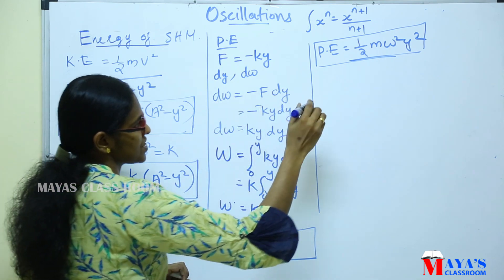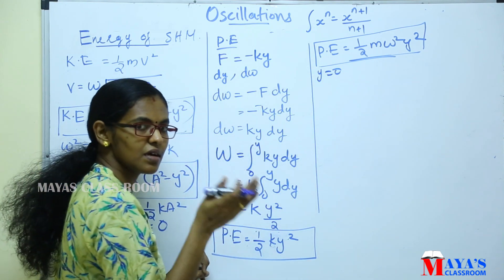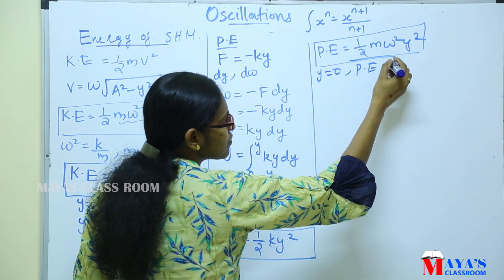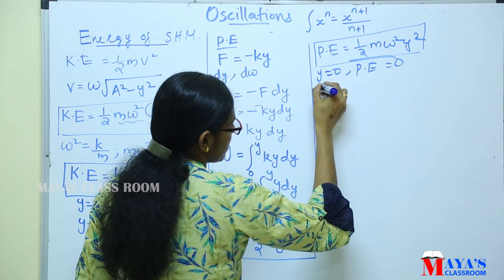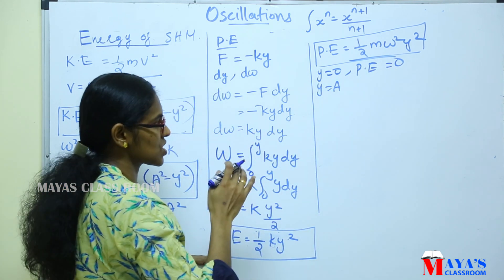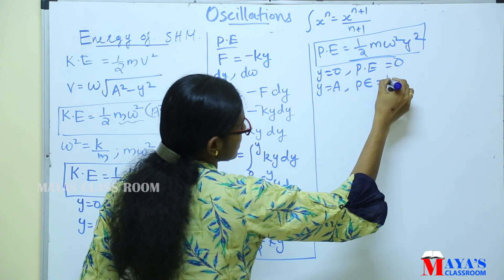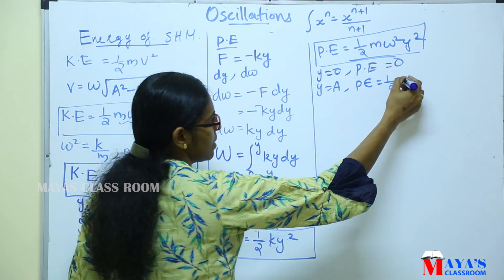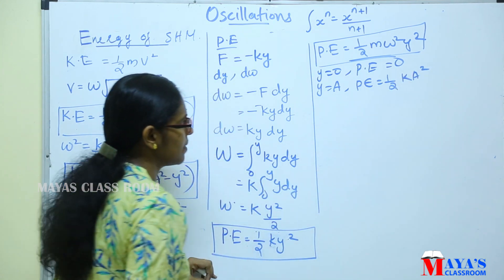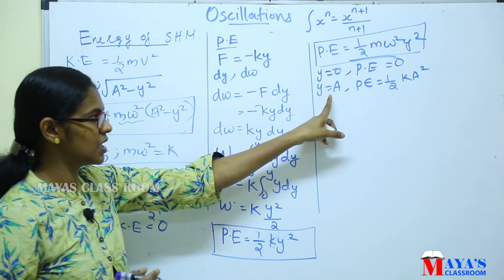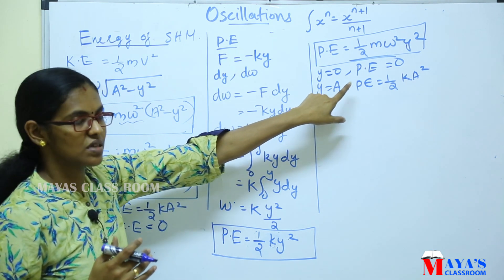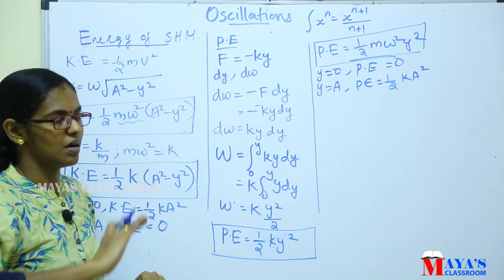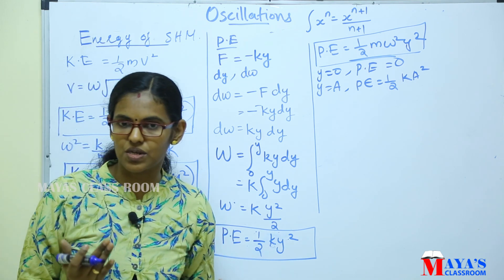At the equilibrium position y equals zero, kinetic energy is maximum. At the extreme position y equals a, kinetic energy is zero. The potential energy is maximum at the extreme position, and minimum at the mean position.